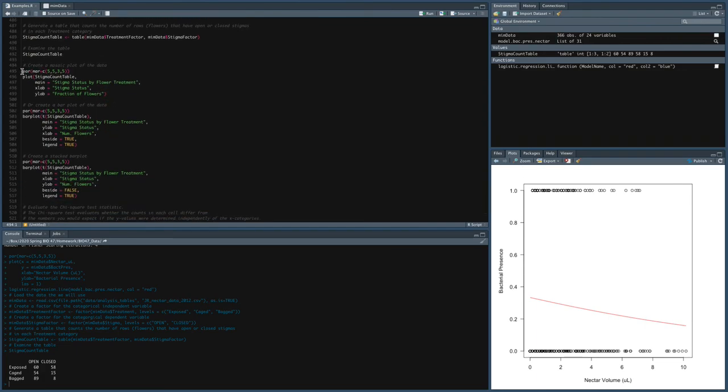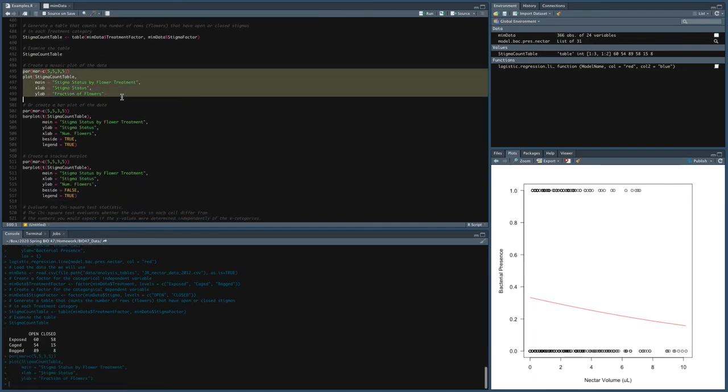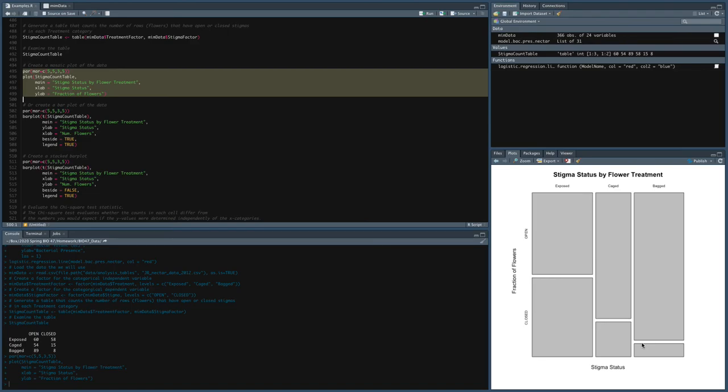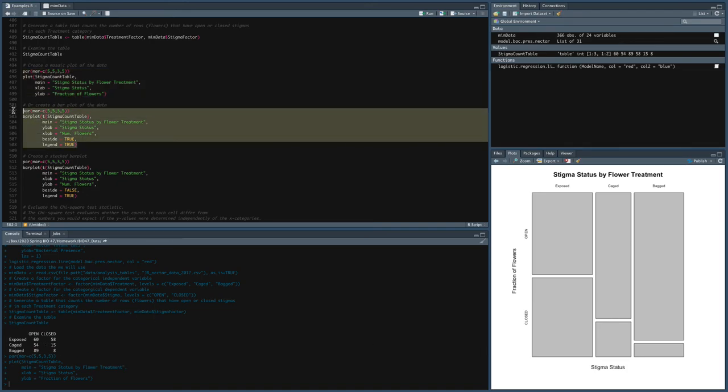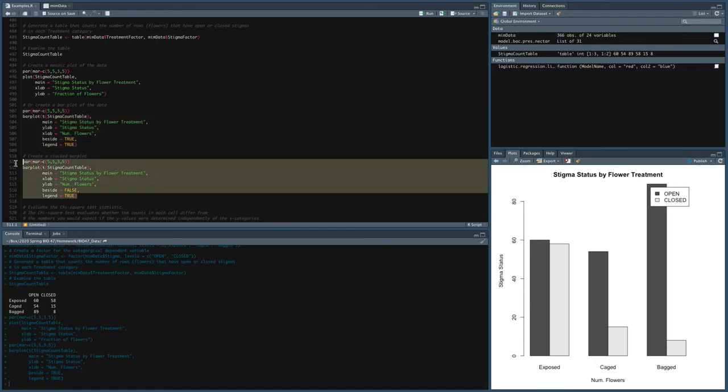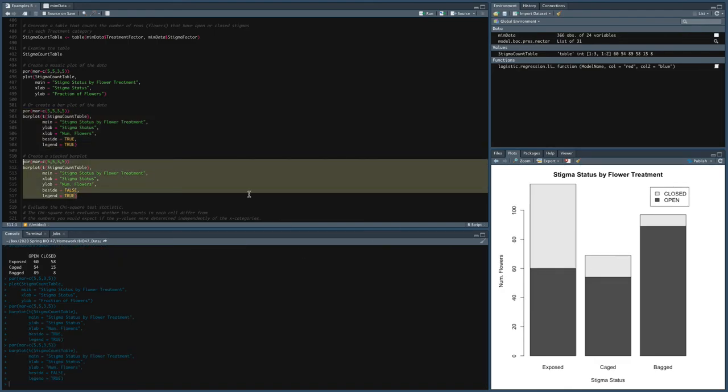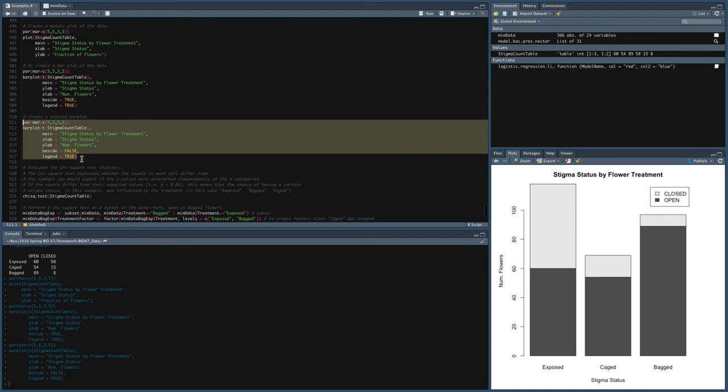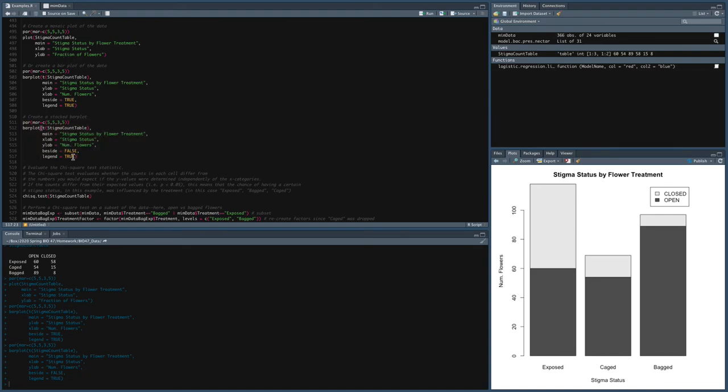So we can visualize this in a couple different ways. One would be through a mosaic plot. I'll just show you that here, where the size of these squares represents the counts here. We could do a bar plot. You can use a stacked bar plot. I kind of like the bar plot more than the stacked bar plot, but that's just my personal preference. I would accept any of these answers.